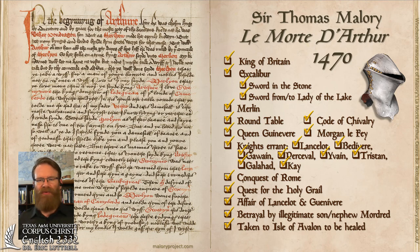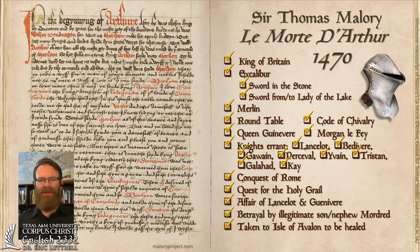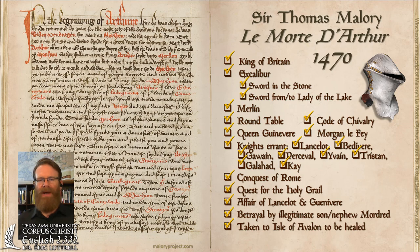The knights include Lancelot, who's probably the most famous, Bedivere, Gawain, Percival, Yvain, Tristan, Galahad, and Kay. All these knights go on a quest for the Holy Grail. There's an affair between Lancelot, Arthur's best knight, and Guinevere his queen. He's betrayed by his illegitimate son or nephew, or both — Mordred. After the final battle at Camlann, he's taken to the Isle of Avalon to be healed. All of these elements are present in the 1470 book Le Morte d'Arthur by Sir Thomas Malory.